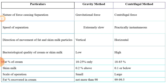In the gravity method, residual fat in skim milk is 0.2% or above, while in the centrifugal method it is 0.1% or below. The gravity method is used for small-scale operations, while the centrifugal method is used for large-scale industries. Fat percent recovered in cream is not more than 90% in the gravity method, but in the centrifugal method it is 99.99%.